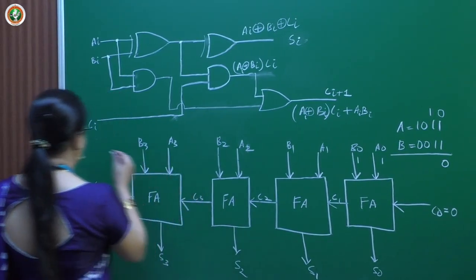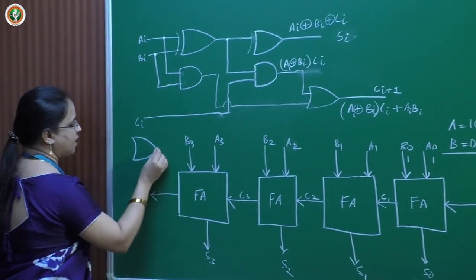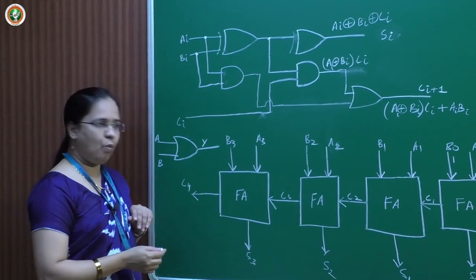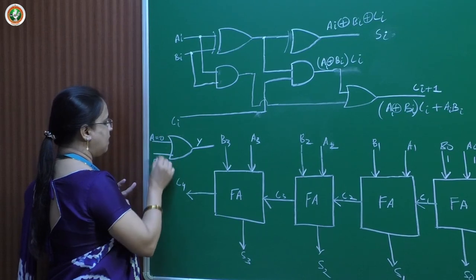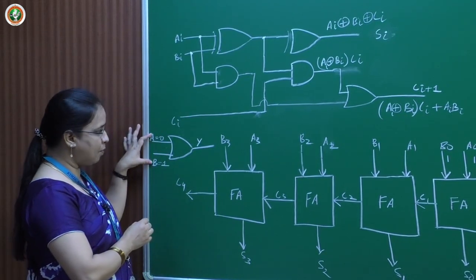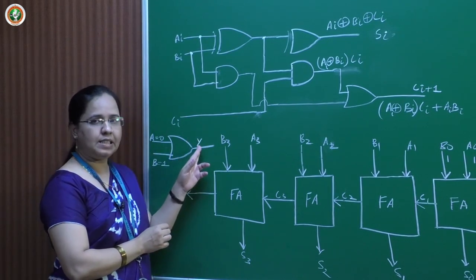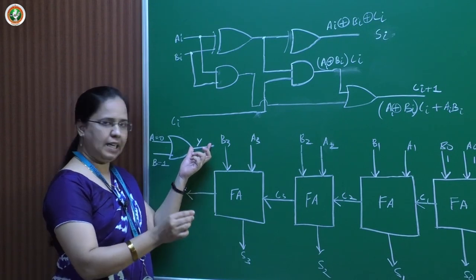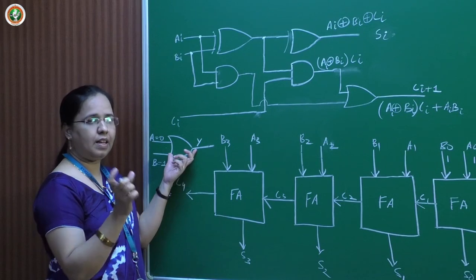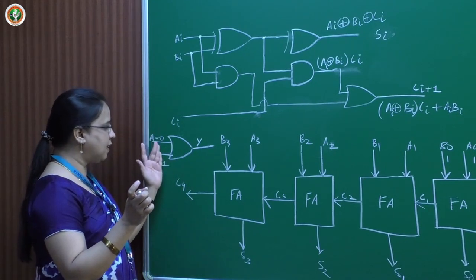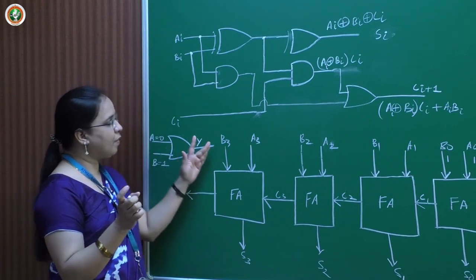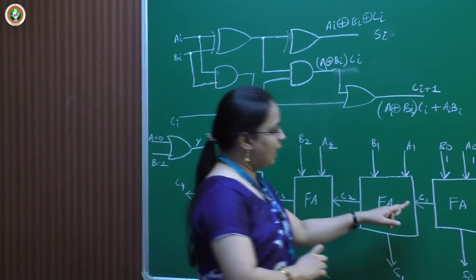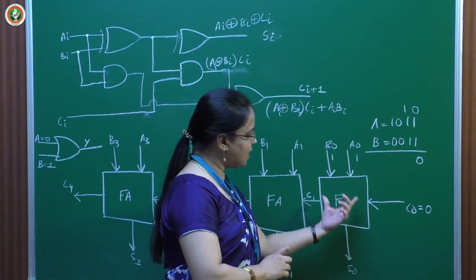That waiting time is called propagation delay. Propagation delay means that whenever we apply input to any gate — for example, an OR gate with inputs 0 and 1 — as soon as the input is applied, the output takes some time to reach steady state. The time taken by the output to attain the steady state is called propagation delay. In other words, after applying input signals to any logic gate, the output takes some time to settle down; that settling time is the propagation delay.